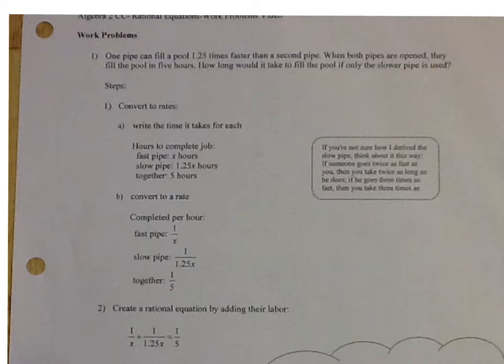So the first thing is you want to write down what we know. So what we know is that the second pipe, the slower pipe, will take 1.25 times longer than the fast pipe. So the fast pipe is X hours and the slow pipe will take 1.25X hours. So the slow pipe has the multiplication even though you would think it's bigger. But it's actually bigger because it's taking more hours. And together, it takes 5 hours.